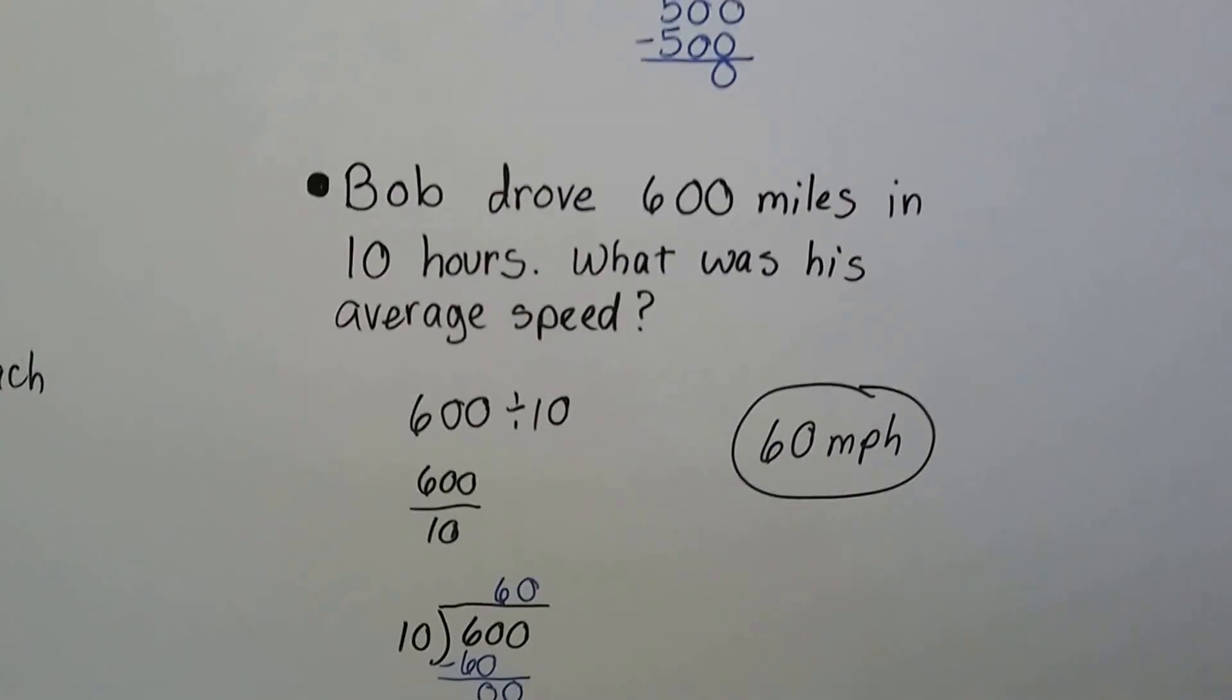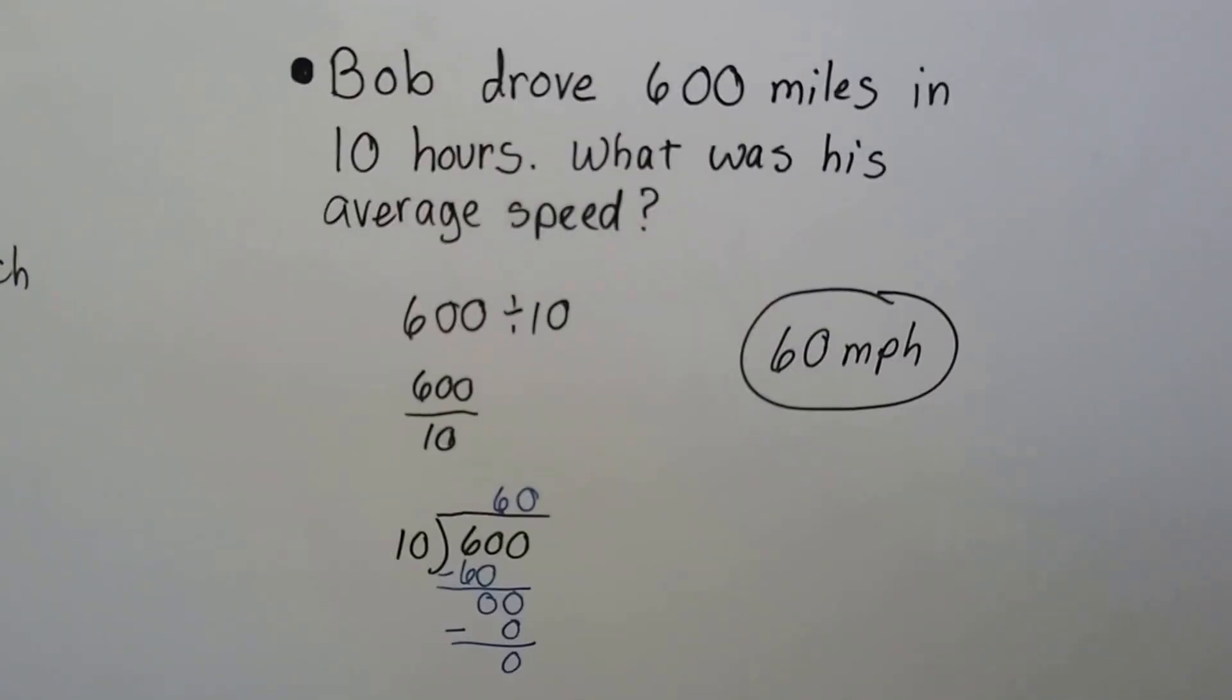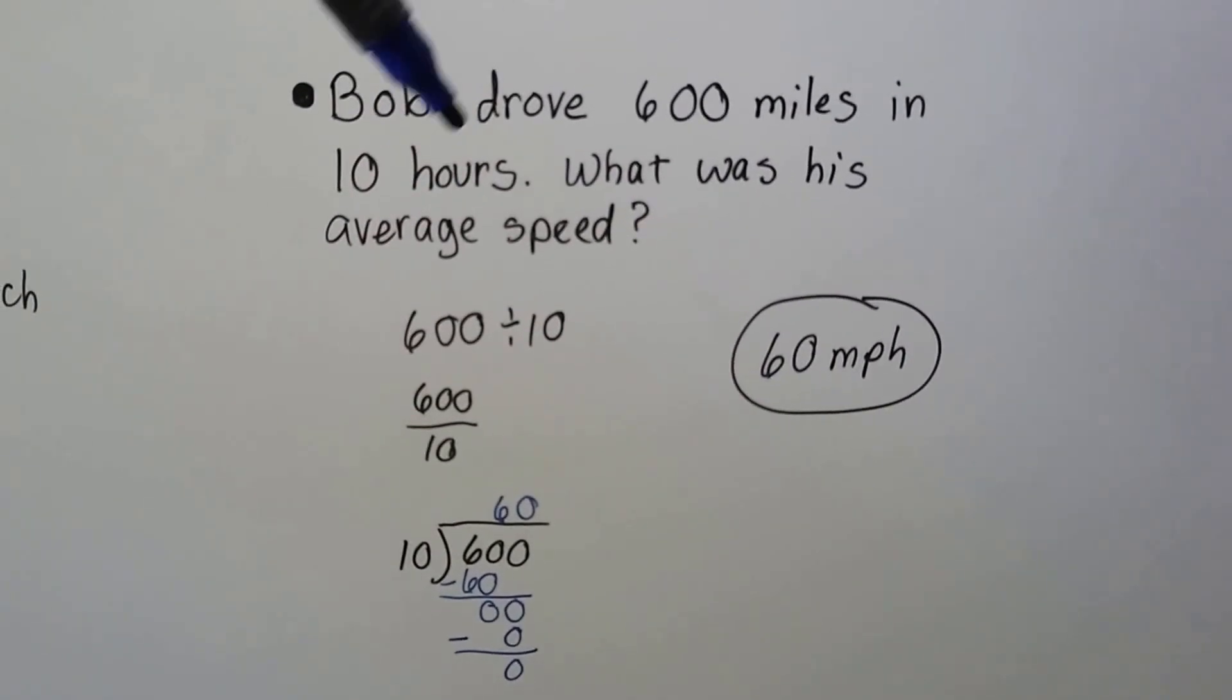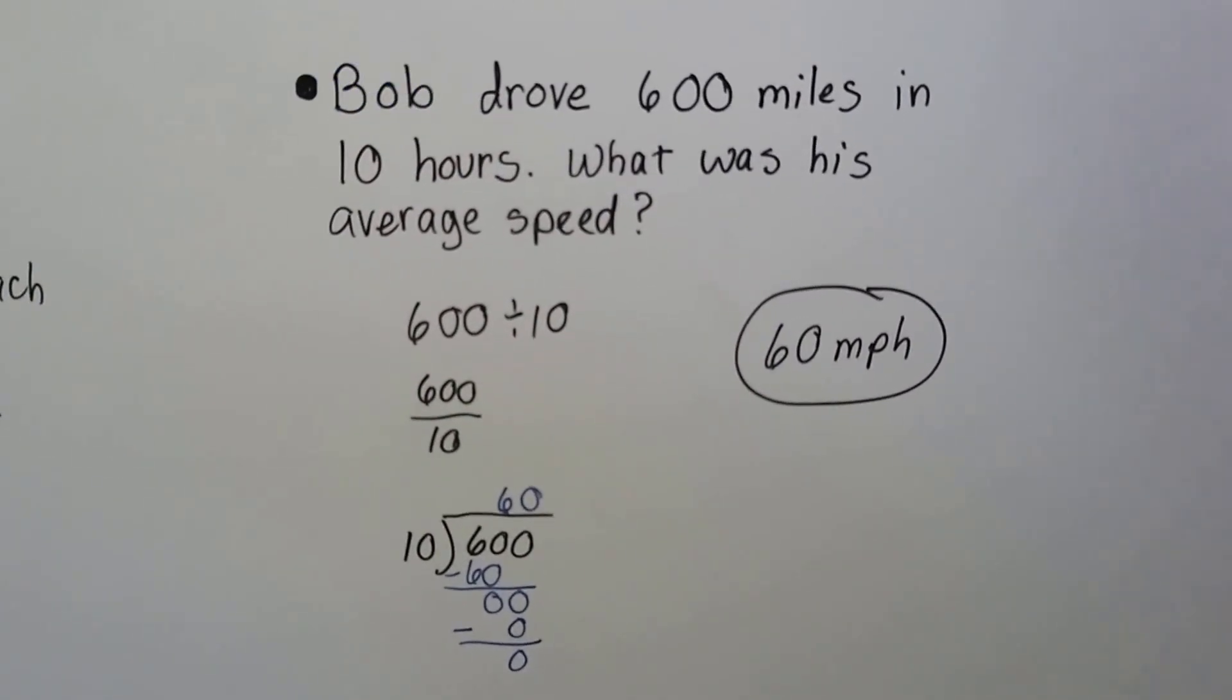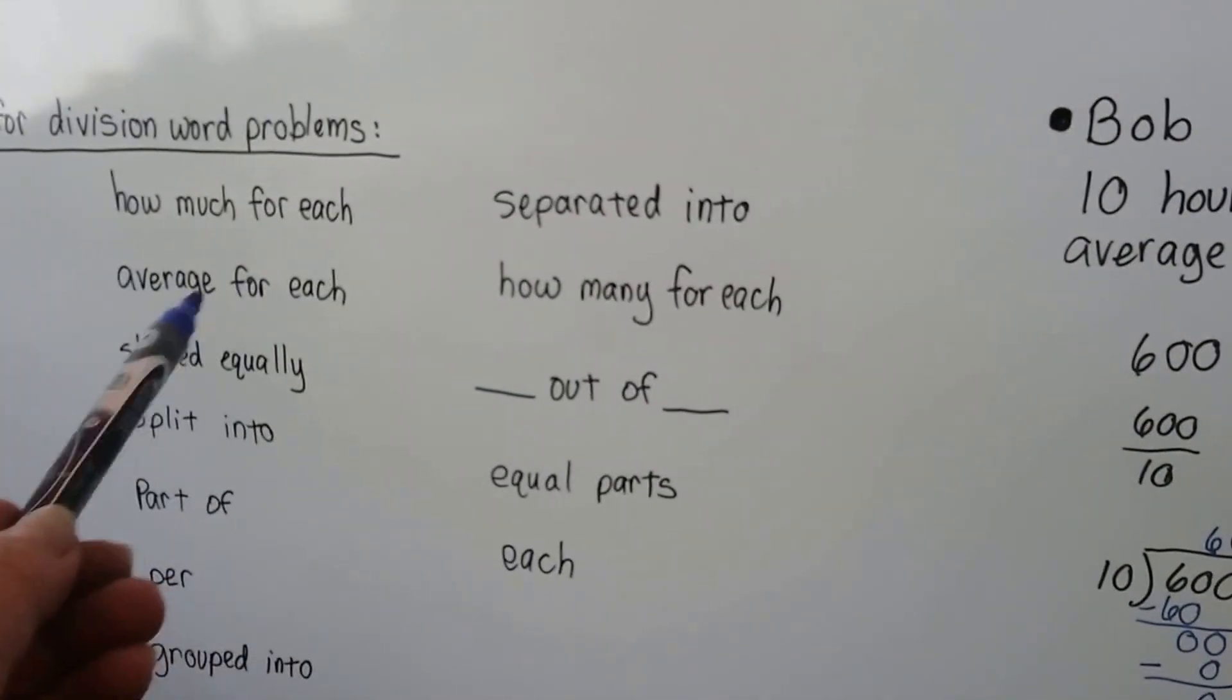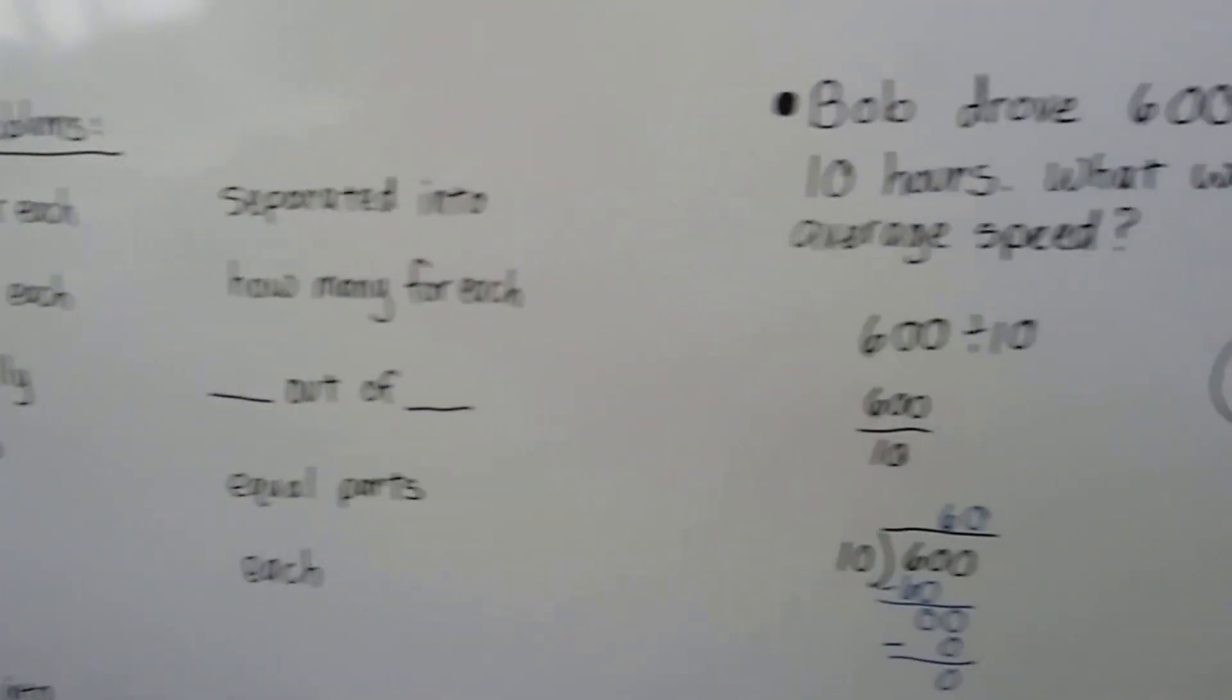And take a look at this one. Bob drove 600 miles in 10 hours. What was his average speed? We're going to divide the 600 into 10 parts, into 10 hours, to find his average. So average is a good clue word for division.